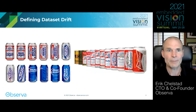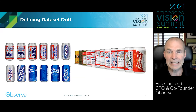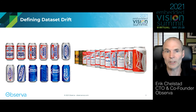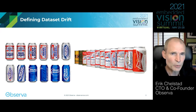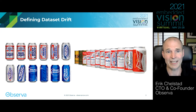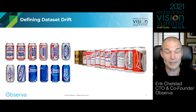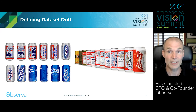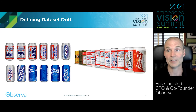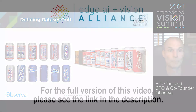So the next concept is dataset drift, which you may not be so familiar with. To define this simply: you create your system at a point in time, and the dataset that underlies all of your training for your neural networks slowly drifts away from reality as the real world changes.